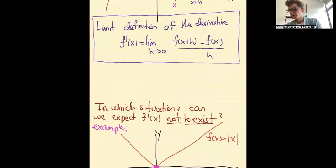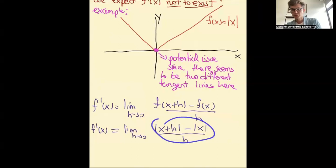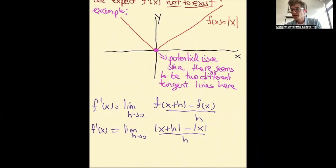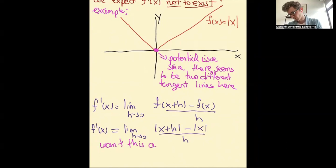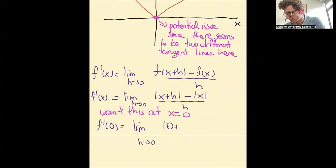If you look at the definition of the derivative, I'm replacing f with the absolute value. This is what I would get — it's like a formula for the derivative at any point x. But I don't want the formula for the slope of the tangent line at any point; I just care about what's going on at x equals zero. So we just want the value of this limit at x equals zero. When you put x equals zero in this limit, you get f prime of zero, because I'm substituting x with zero. This would be the limit as h approaches zero of the absolute value of zero plus h, minus the absolute value of zero, divided by h.